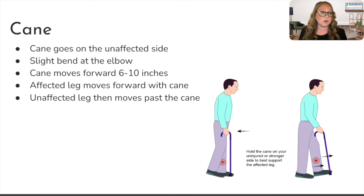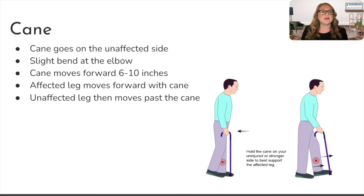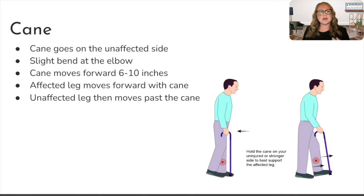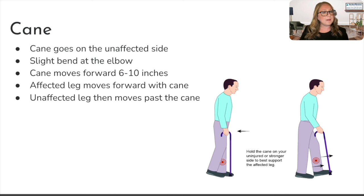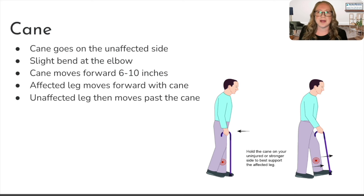The key difference compared to the walker: with the walker, we go walker and then leg, leg. With the cane, we go leg and cane together, and then that good leg moves up past the cane — so it's a more natural gait. They can move a little more quickly if they just need a little extra support. One more time: cane on the unaffected good side, bad leg and cane go forward together, then good leg forward past the cane — a more normal walking stance.